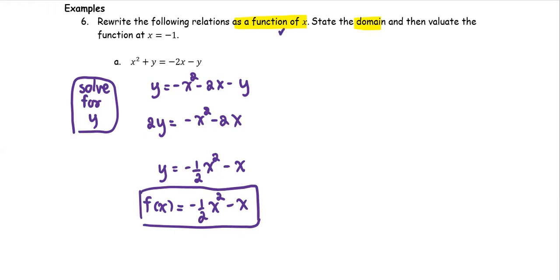f of x equals negative 1 over 2 times x squared minus x as the function of x for this relation. Next, we can see the domain. The domain is the set of the x values. In this case, x can be any numbers. Therefore, the domain of this function is the set of all real numbers.